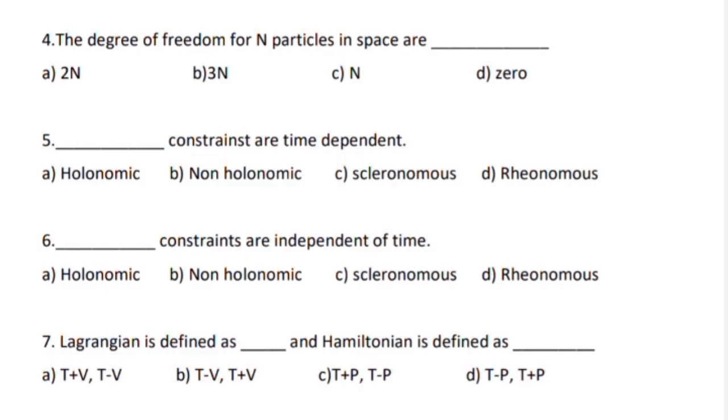Fourth one, the degree of freedom for n particles in space are 3n. Fifth one, the dash constraints are time dependent. Right answer, rheonomous.